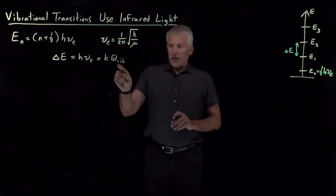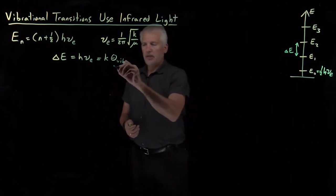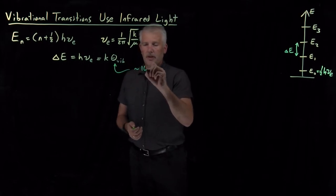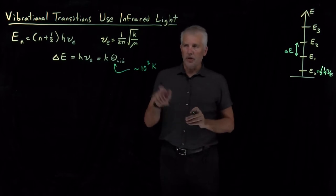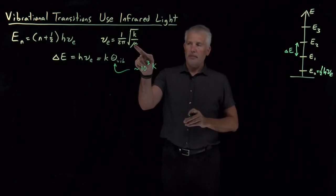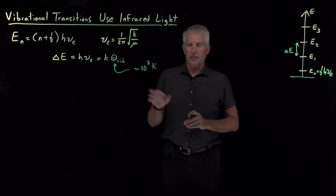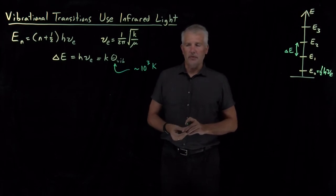So we've also seen that for a typical diatomic molecule, this vibrational temperature is somewhere in the vicinity of roughly 1,000 Kelvin or so. It depends on the individual molecule. Every molecule has a different mass, reduced mass, spring constant, but it's somewhere in the vicinity of a few thousand Kelvin, typically.